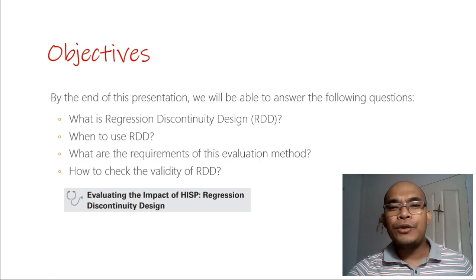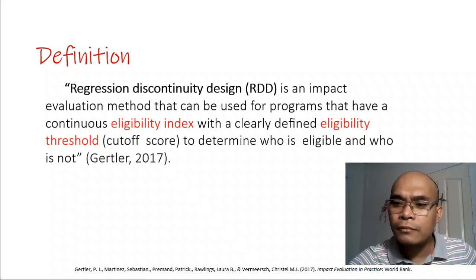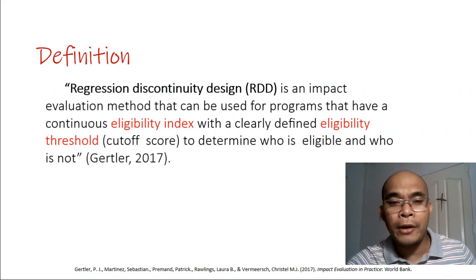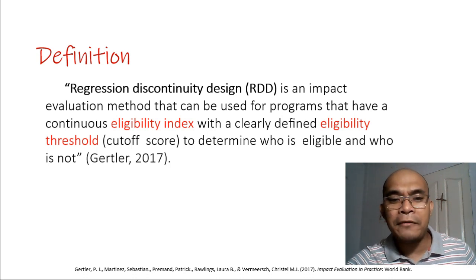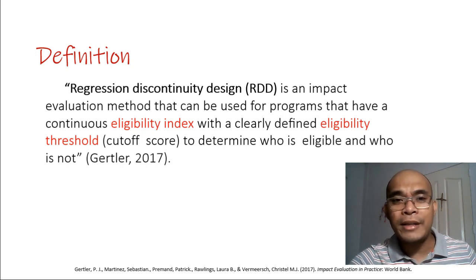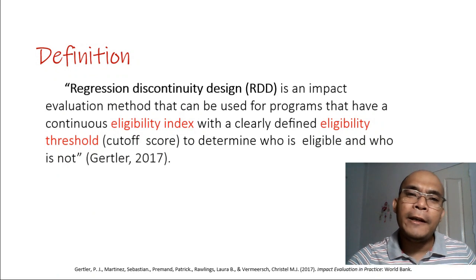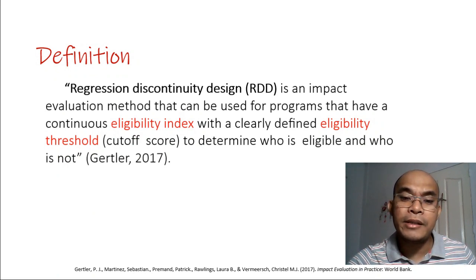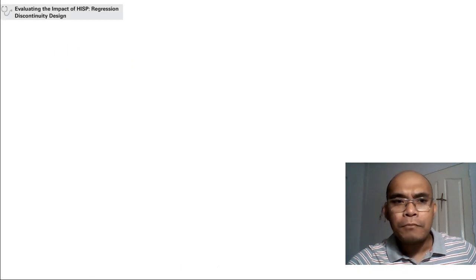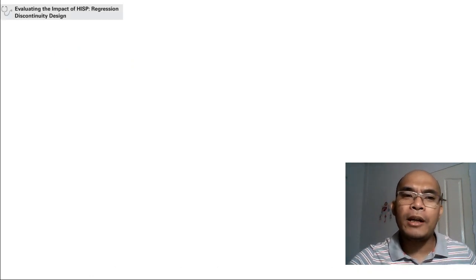By definition, Regression Discontinuity Design, or RDD, is an impact evaluation method that can be used for programs that have a continuous eligibility index with a clearly defined eligibility threshold or cutoff score to determine who is eligible and who is not. This is according to Gertler 2017. The main reference we're going to use is 'Impact Evaluation in Practice' by Gertler et al., 2017.